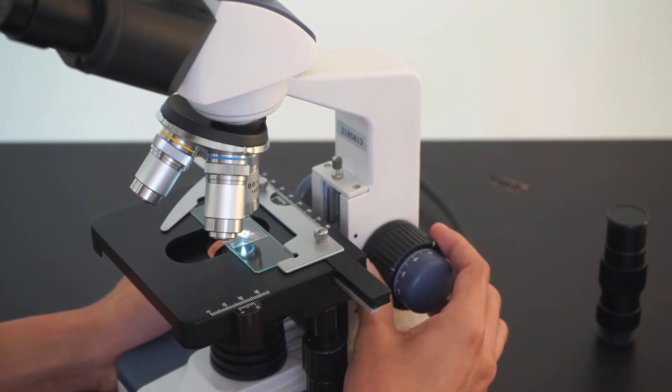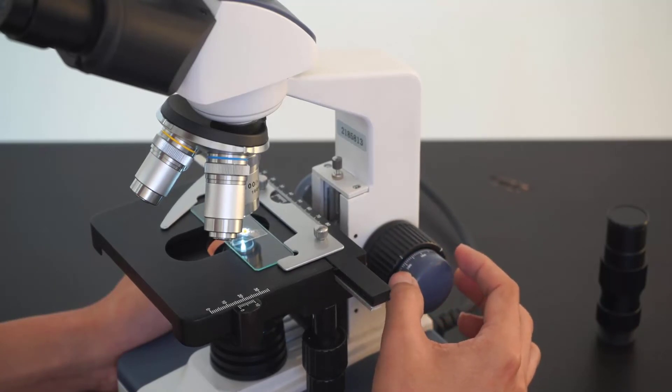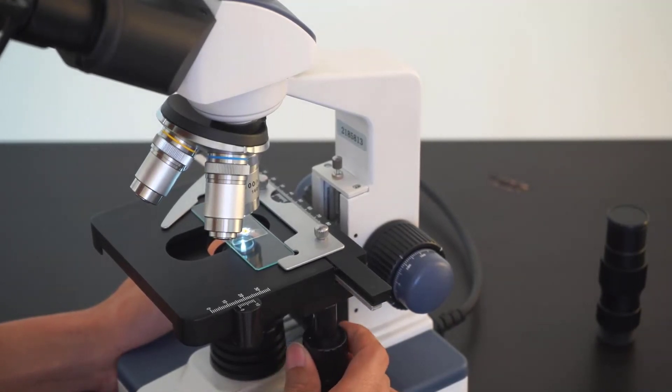This would be the larger focusing ring, and there is a precision focusing ring which you can use to precisely focus. To move the stage, we just need to turn the knob on the stage.